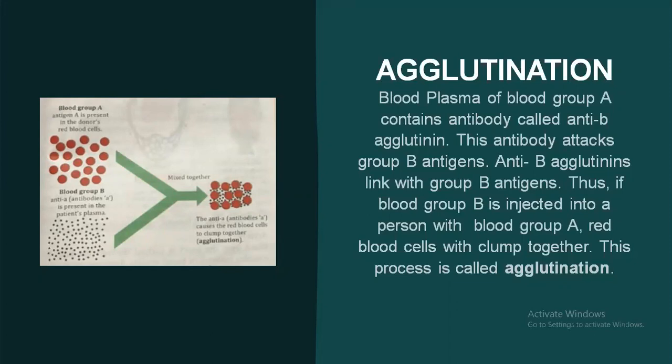Antibodies that produce such reactions are called agglutinins. See in this diagram — you can see one example they have given. Blood plasma of blood group A contains an antibody called anti-B agglutinin. This antibody attacks group B antigens. Antibody B agglutinins link with group B antigens.